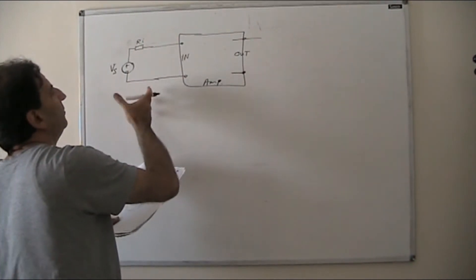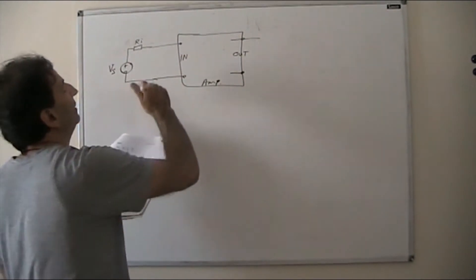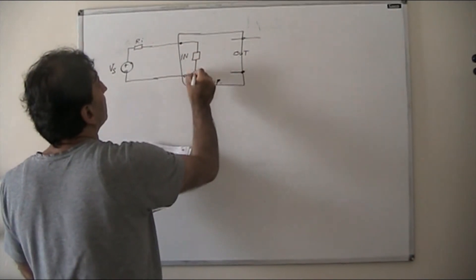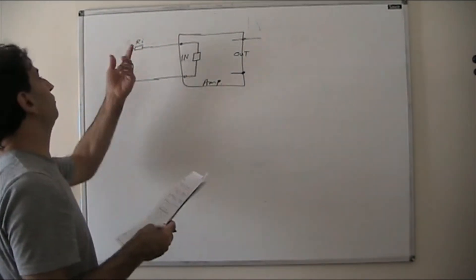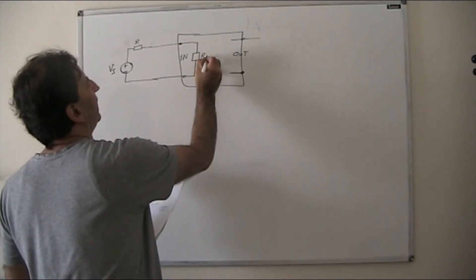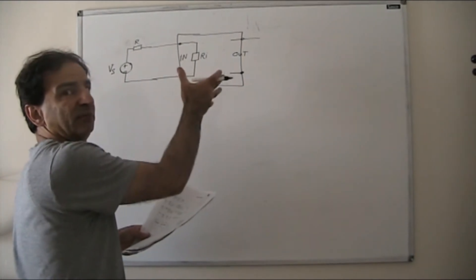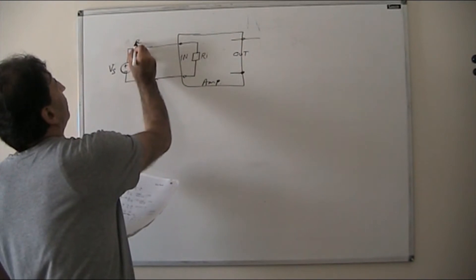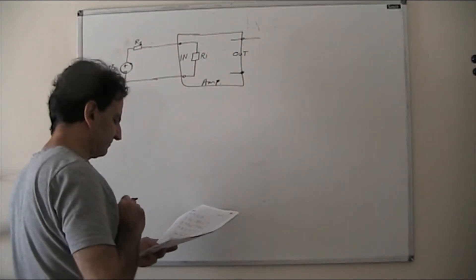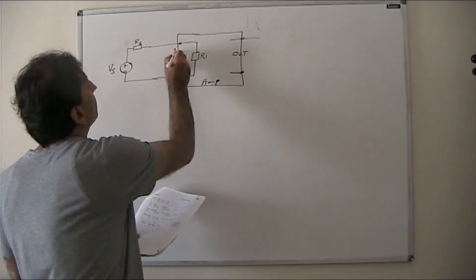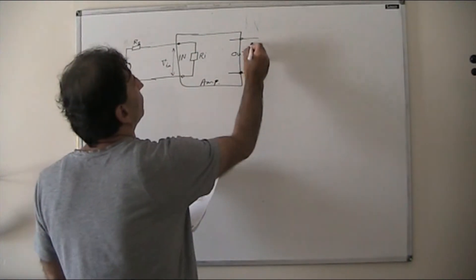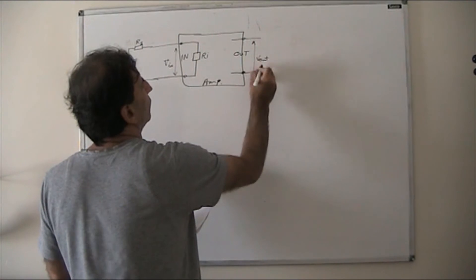The amplifier itself, because it is a source of supply, will be seen as having an internal resistance. To avoid confusion — because we have two internal resistances, one for the source and one for the amplifier — I'll name the amplifier's internal resistance separately, and name the source's internal resistance RS. At this node we have VIN, the input voltage.